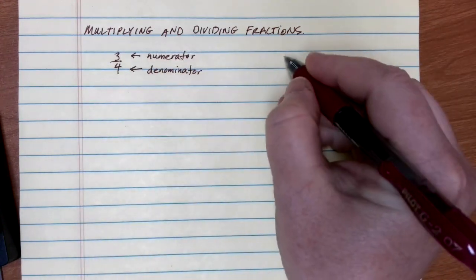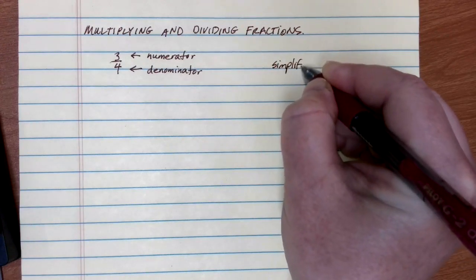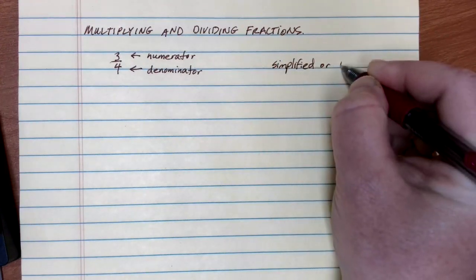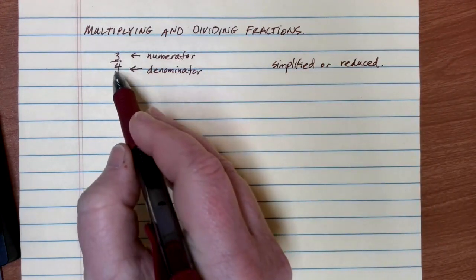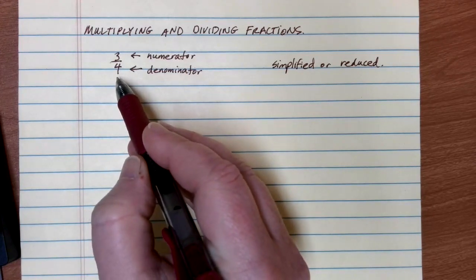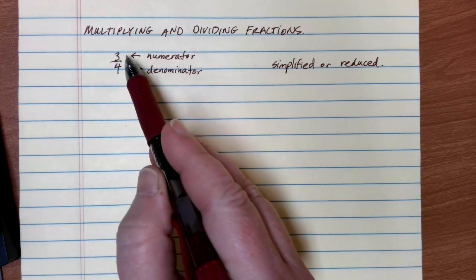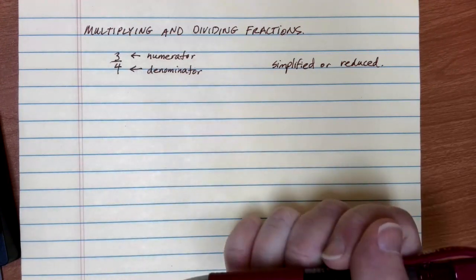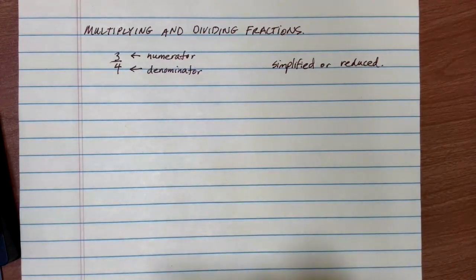This number here, three-fourths, is something that's called a simplified or reduced fraction. In order to be simplified or reduced, you need to check if there are any numbers that will go into both the numerator and the denominator. In this case, the only way to get three is three, and the only way to get four is two times two. There are no common factors.